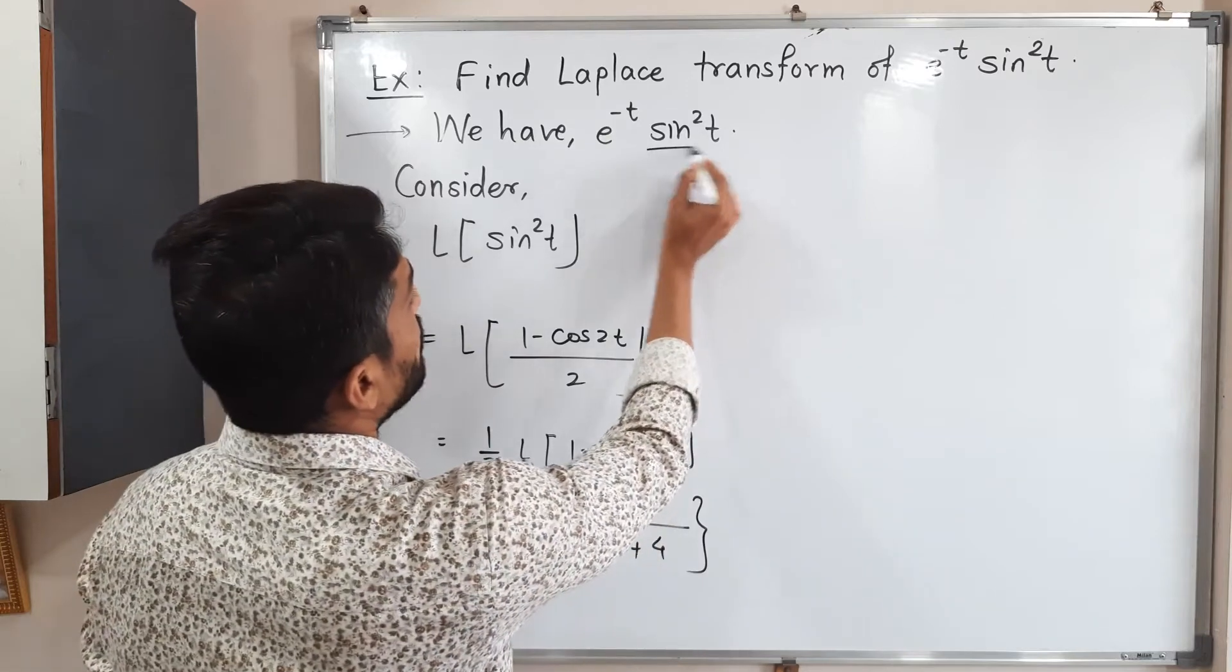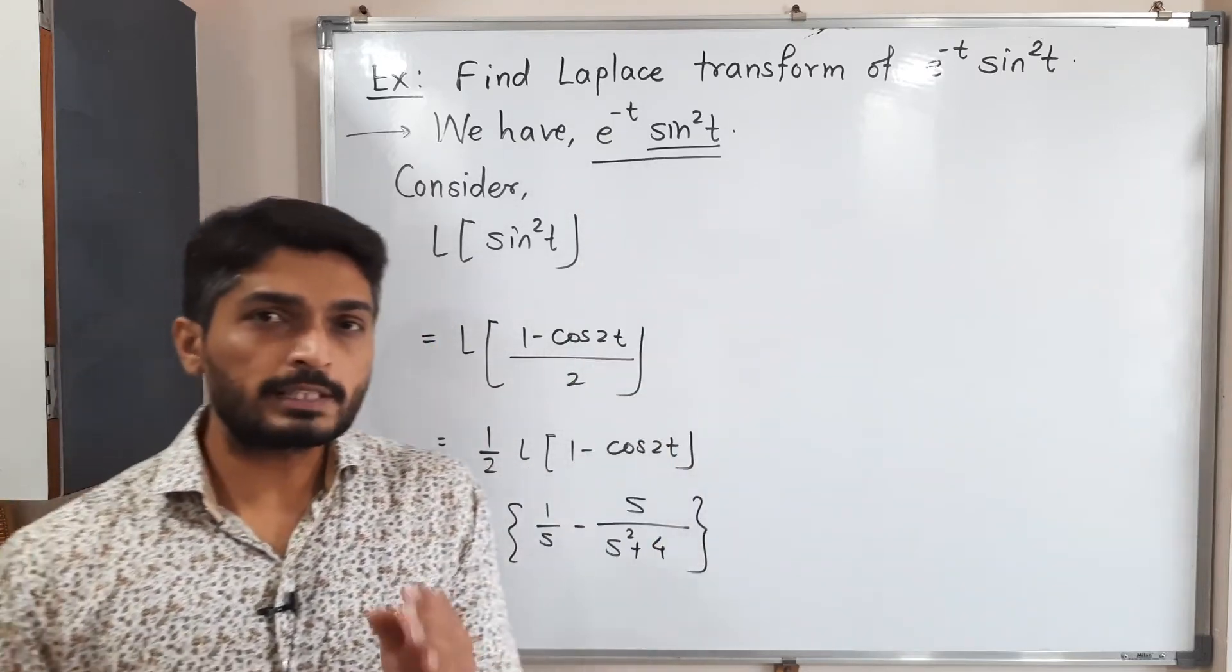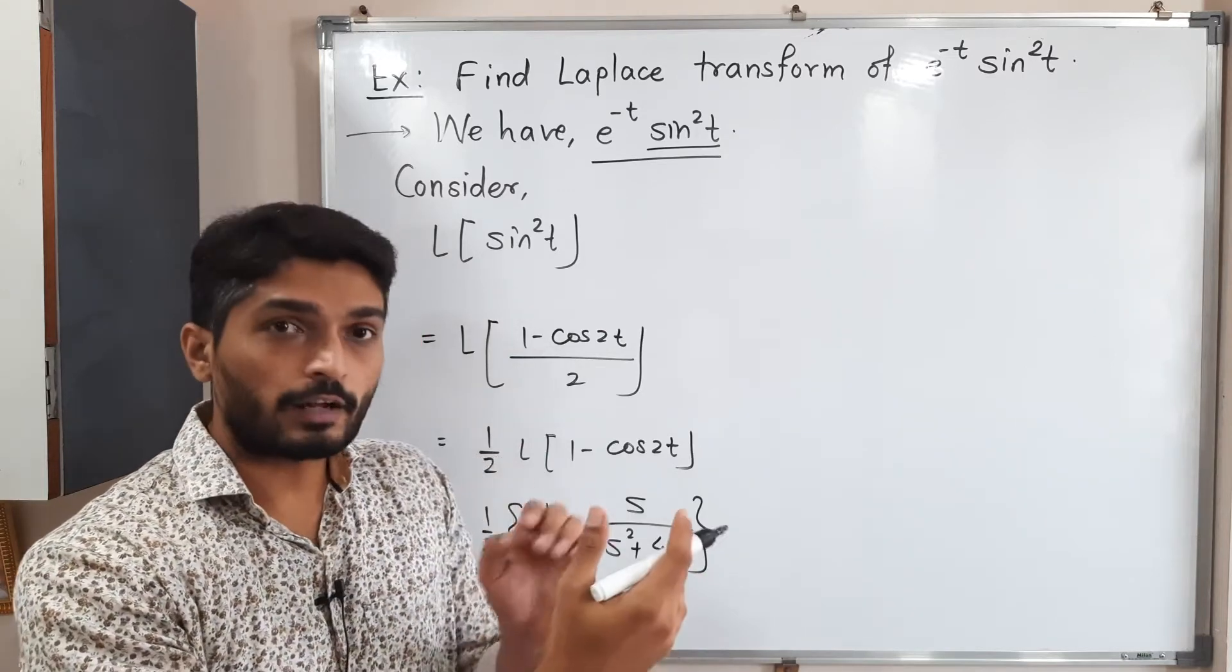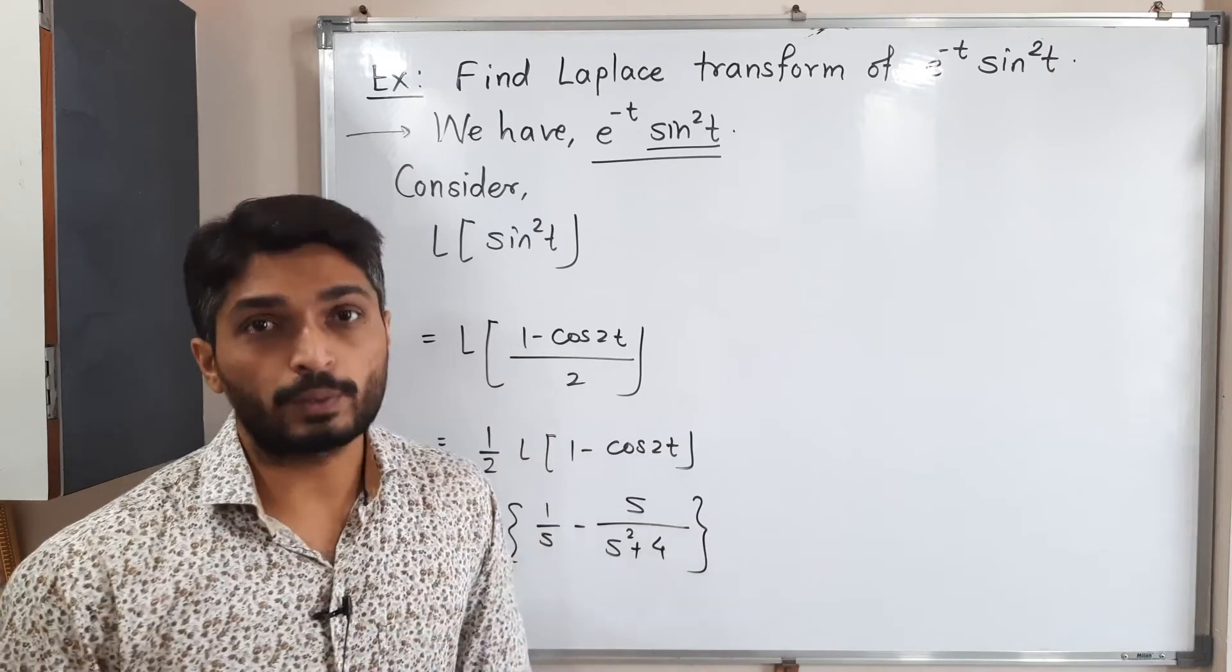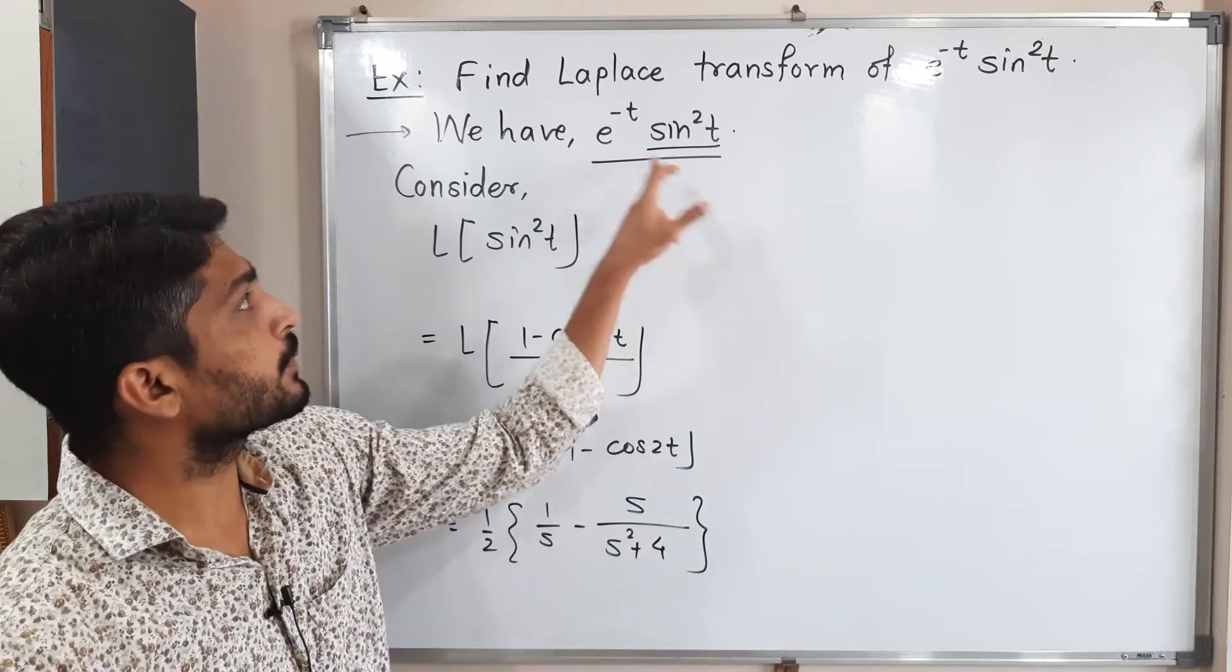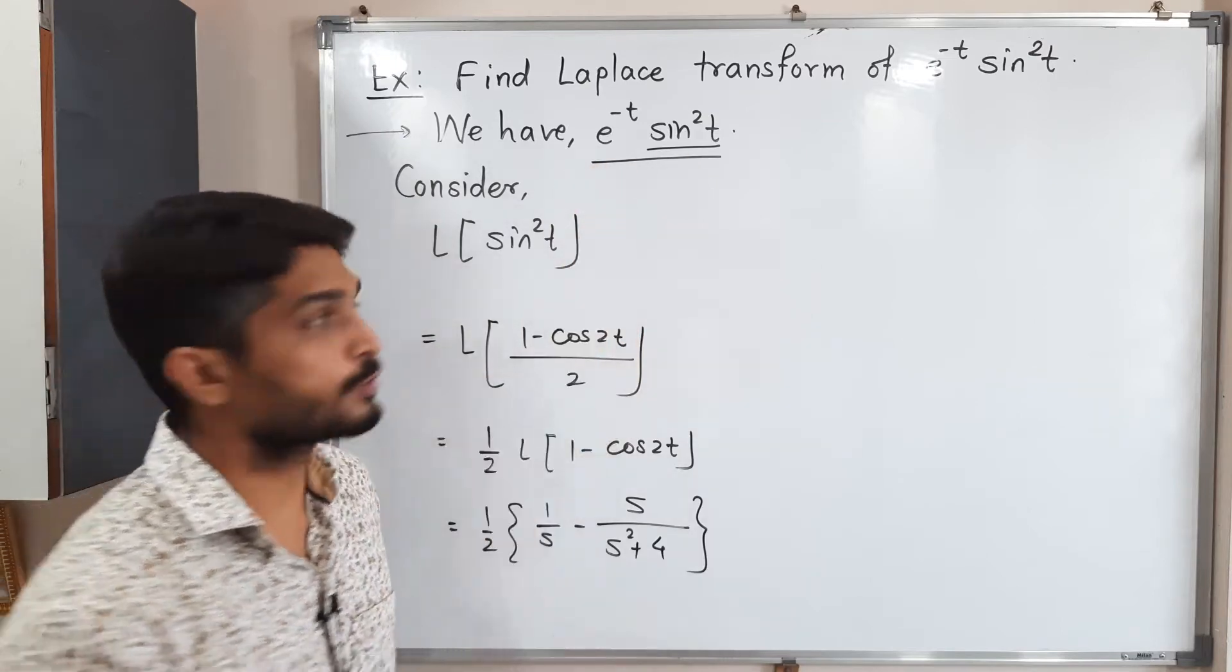So that means we found out the Laplace of sine square t. Now we have to focus on entire function. That means in case of Laplace normally we start with the right hand side function and after that we consider all functions one by one. Fortunately we have only two functions here: sine square and e raised to minus t. This one we have done. Let us consider e raised to minus t now.